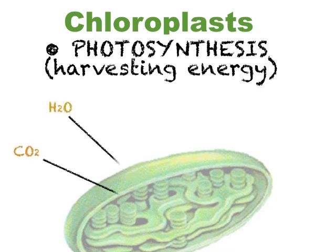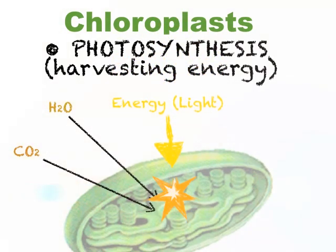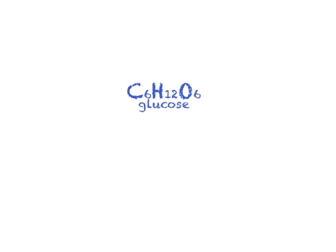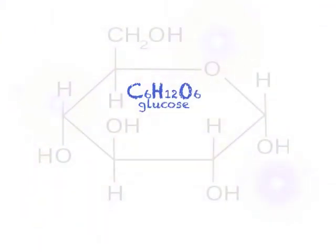Using solar energy, chloroplasts produce highly energetic organic molecules — glucose — from small inorganic molecules: carbon dioxide and water. Oxygen is released as a byproduct of this process. Glucose is a highly energetic molecule because the energy from the sun is trapped in it. Glucose can be used in the plant body, or it can be eaten by other organisms and used as a source of energy.